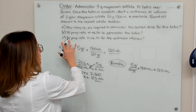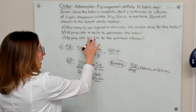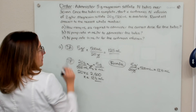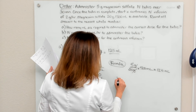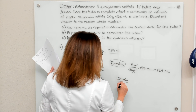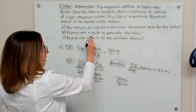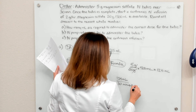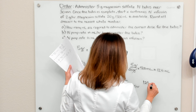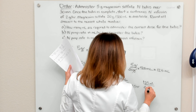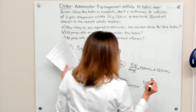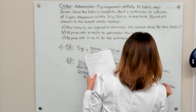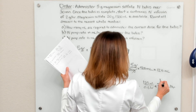Part B is asking us what is the IV pump rate in milliliters per hour to administer the bolus. Per the order, we need to give the bolus over 30 minutes, so we're giving 125 mL over 30 minutes. We want our rate in milliliters per hour. Since 30 minutes equals 0.5 hours, if we take 125 mL and divide by 0.5 hours, we get an IV pump rate of 250 mL per hour. That is the answer to part B.